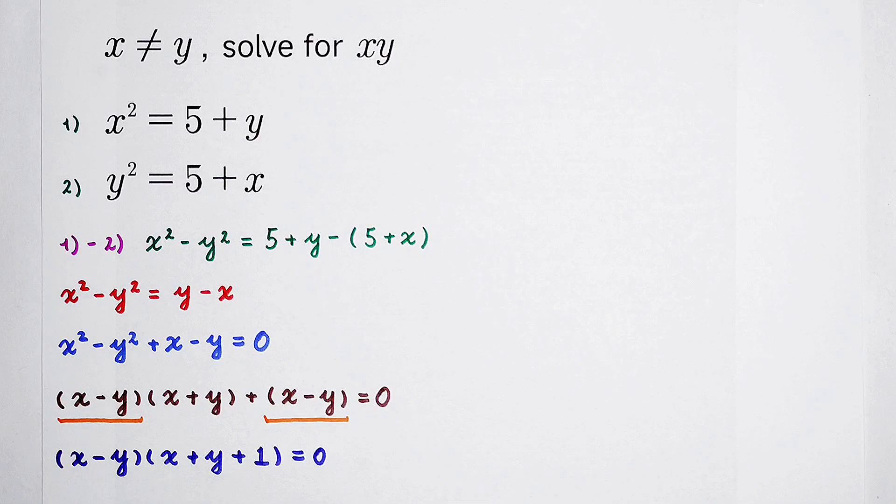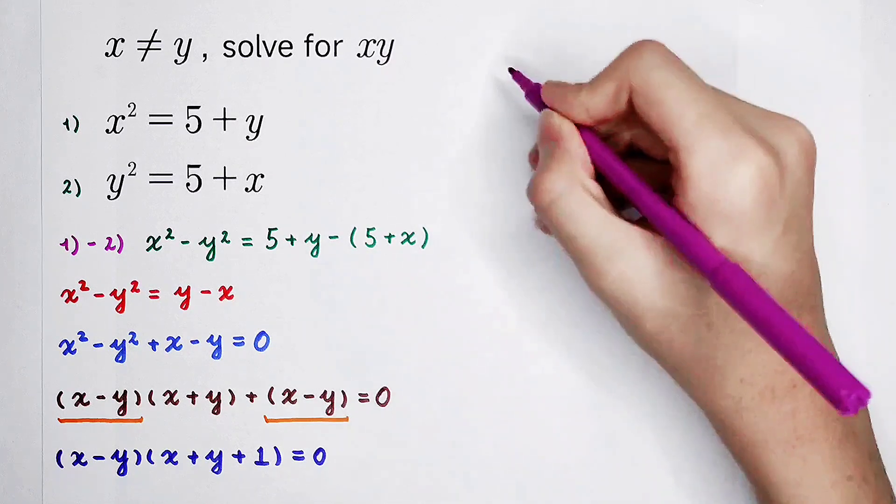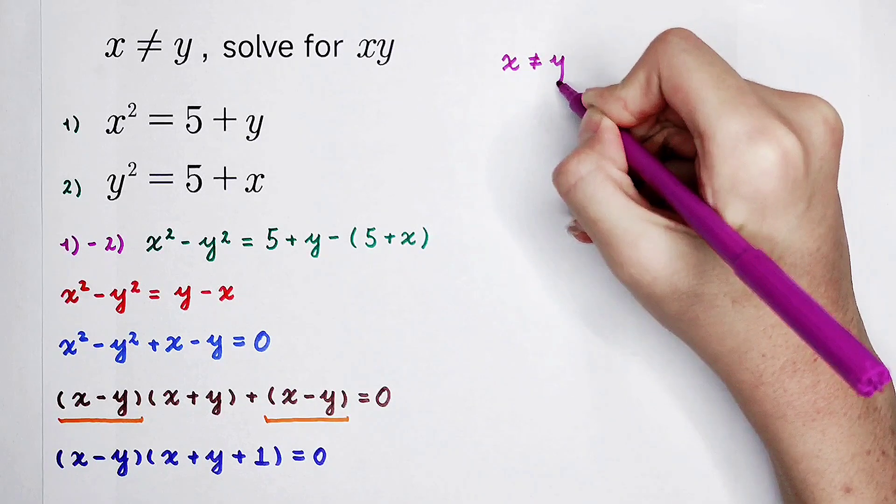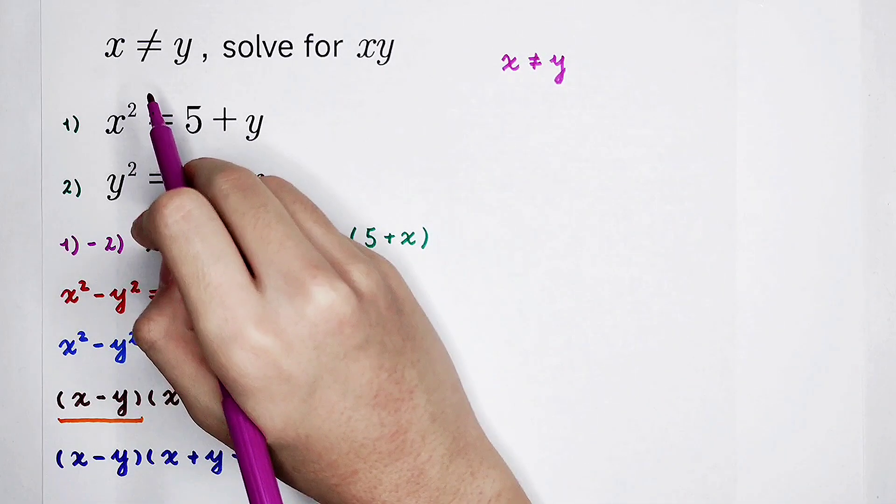So, the left hand side is a product, and the right hand side is 0. So, this equals 0, or this equals 0. But we know that x is not equal to y. Here, take a look if you forgot.